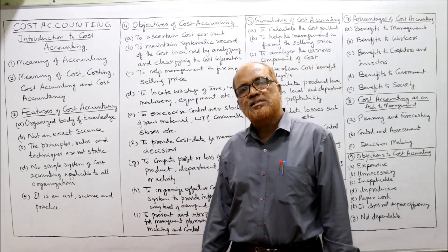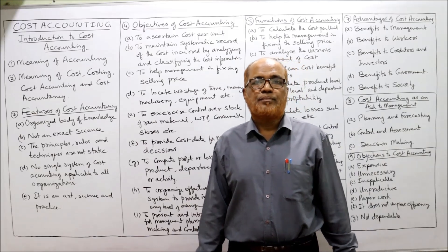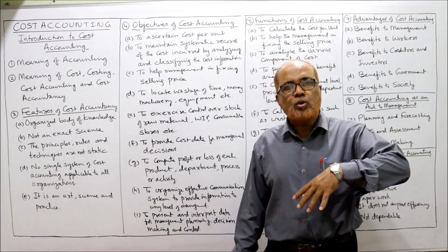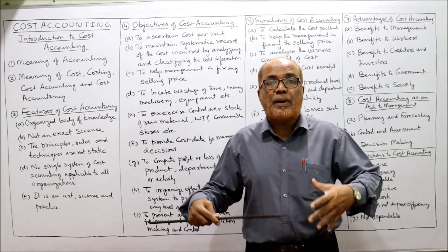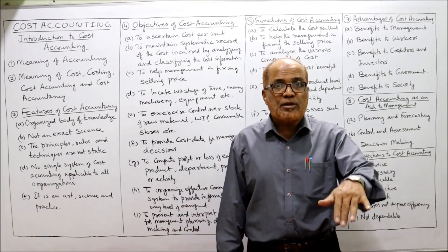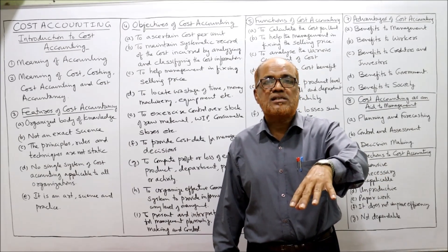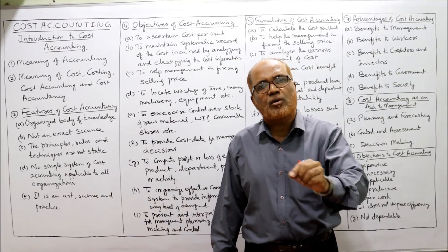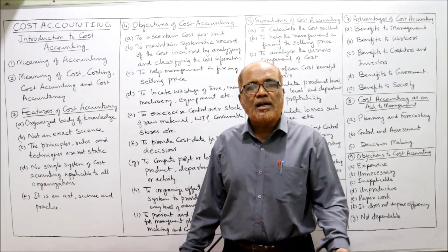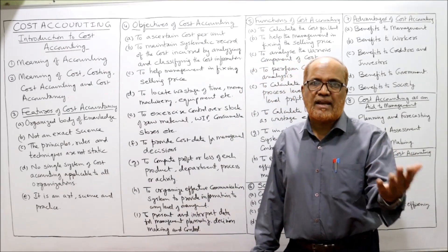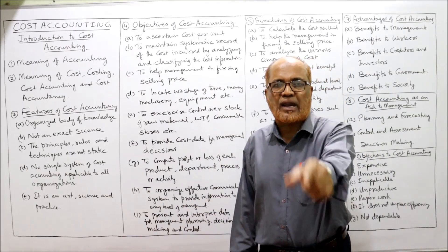Cost accounting is also an art, not only a science. It depends on how to make reports, how to classify transactions — it depends on the person recording. Creativity arises if we perform cost accounting continuously, so it becomes an art. Ultimately, cost accounting is both a science and an art. These are features to remember for writing theory questions in examinations.